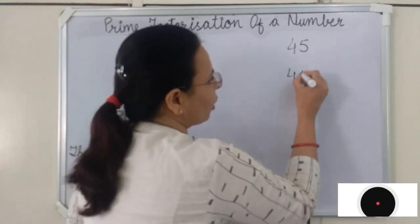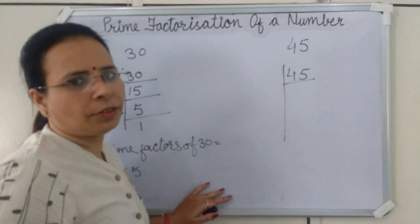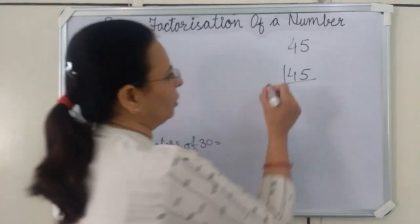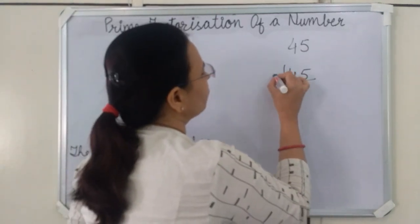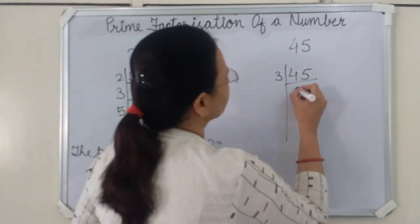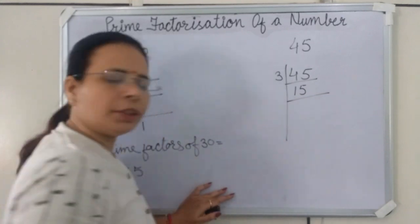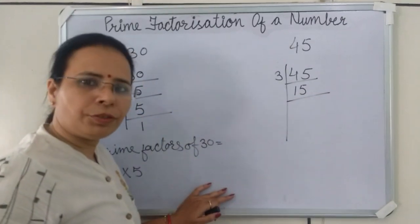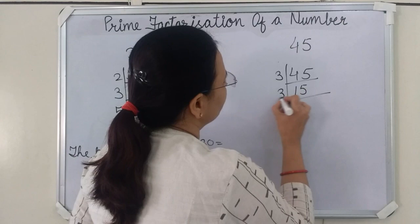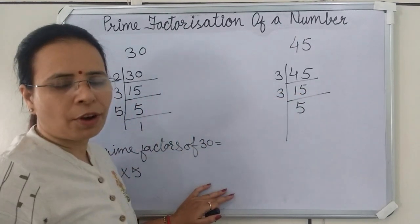Which is the smallest prime number that exactly divides 45? We will divide 45 by 3. We get 15. Now we will divide 15 by the smallest prime number, which is 3, and we get 5.